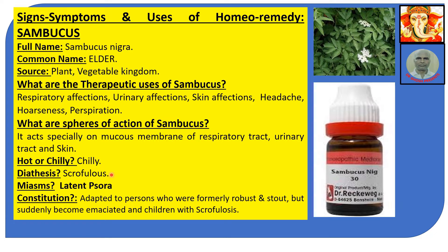In no other medicine is this term used. Scrofulous means a person who has inherited tuberculosis from his family — they are actually scrofulous persons. Miasms: Psora is in the backdrop. Constitution: adaptive persons who were formerly robust and stout but suddenly become emaciated, and children with scrofulosis. Here is the image of the plant and a sample of the medicine.